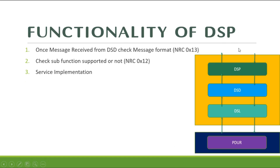Functionality of DSP: DSP receives the service request from the DST module, performs checks, and executes a particular action based on the request. It may get data from DIM or the SW application layer, assembles the positive response, and sends it to DST. A few DSP functionalities are: once a message is received from DST, it checks the message format — if not valid, it sends NRC 0x13. It also checks whether the sub-function is supported — if not supported, it sends NRC 0x12. DSP is also responsible for service implementation, which is the implementation of UDS and OBD.